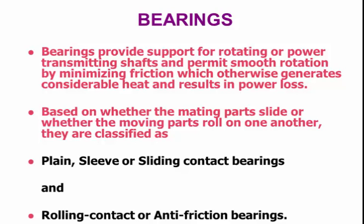Depending on the relative motion between the two parts, you have two types. You have what they call plane bearings, sometimes called sliding bearings. And then you have rolling contact bearings. The sliding or sleeve bearings — plane bearings — are the sort of thing you get in the bottom end of an engine. It's a shell with a flat surface.